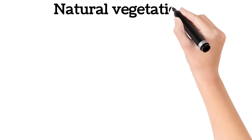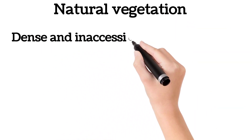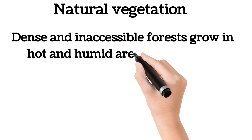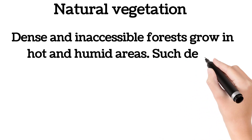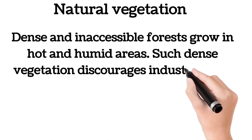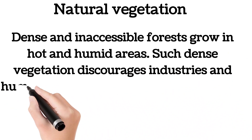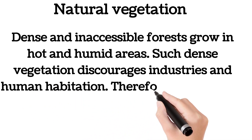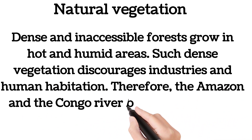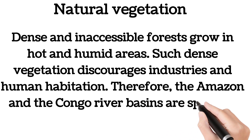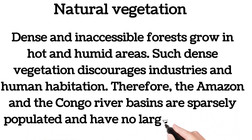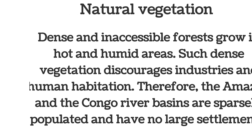Natural vegetation: dense and inaccessible forests grow in hot and humid areas. Such dense vegetation discourages industries and human habitation. Therefore, the Amazon and the Congo river basins are sparsely populated and have no large settlements.